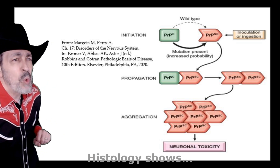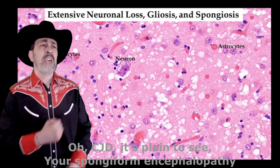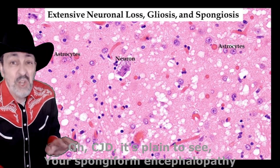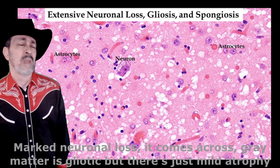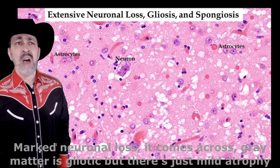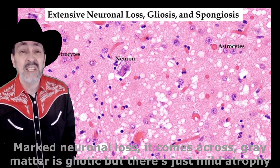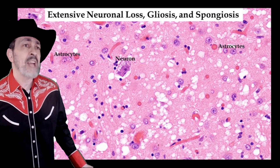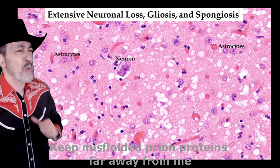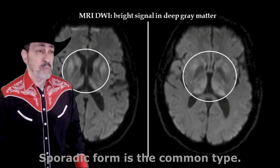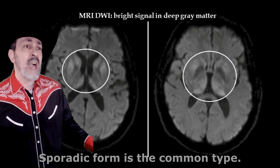Histology shows CJD — it's plain to see. Spongiform pattern, neuronal loss. Brain matter is spongiform, but it's just mild atrophy. Keep misfolded prion proteins far away from me. Sporadic form is the most common type.